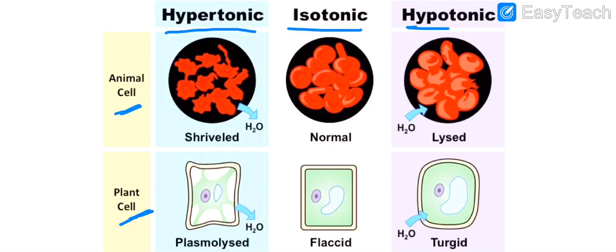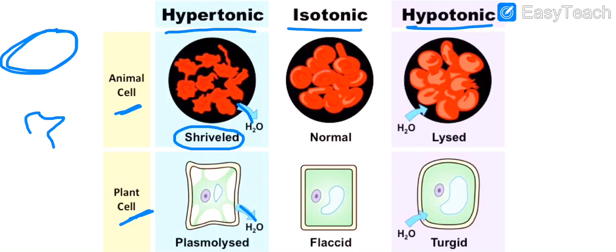In hypertonic solution, water is less outside, so water from the cell comes out — you can see from the arrows — and that leads to shriveling, that is shrinkage of the cell. In isotonic solution, the water outside the cell and water inside the cell is the same, so there won't be any change and the cell will remain normal.